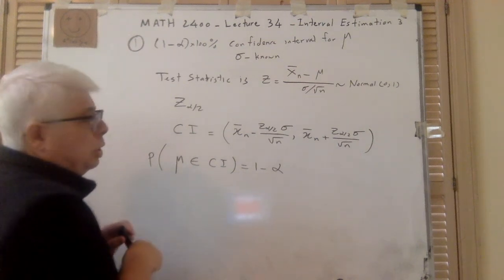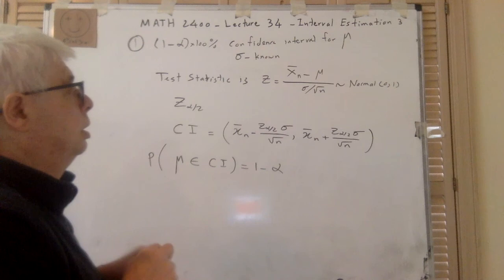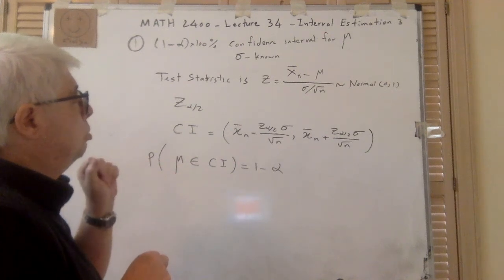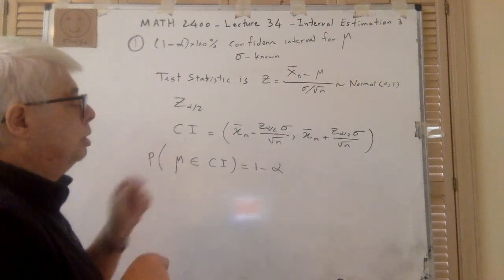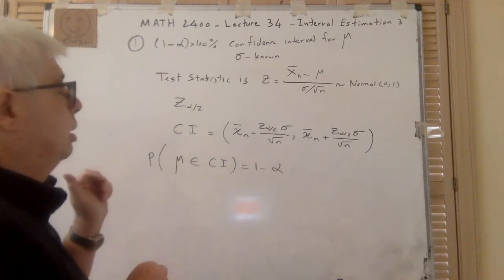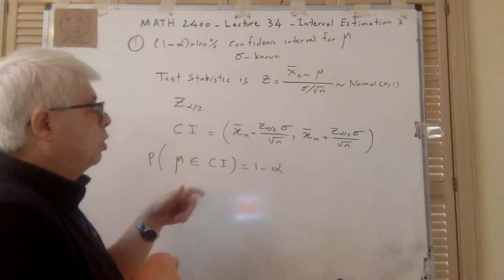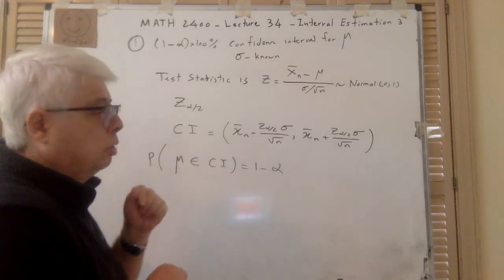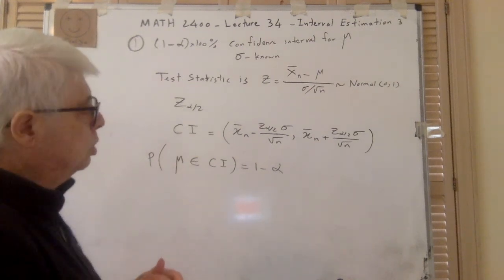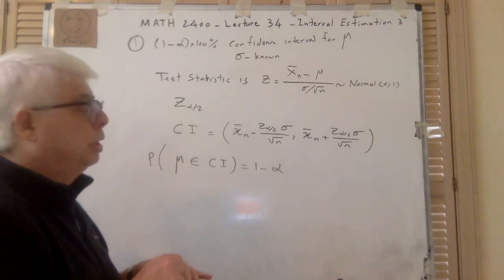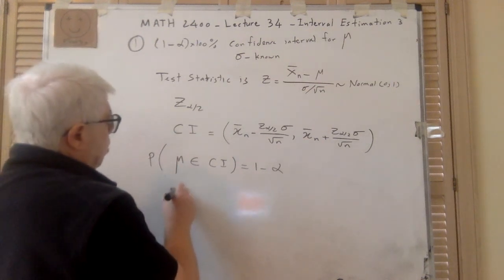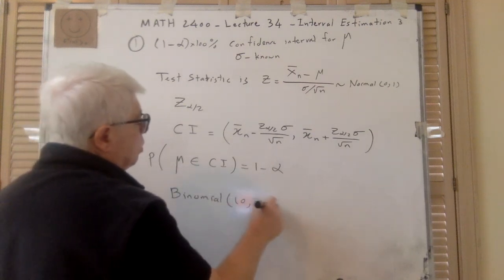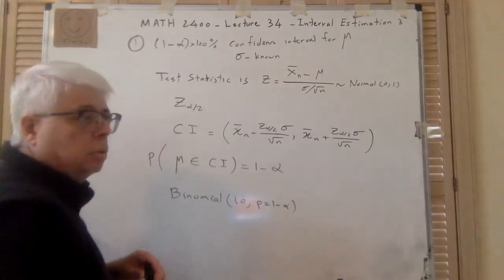So when you do the experiment one time, that's like a Bernoulli trial. Success is that μ, which is unknown, falls within this interval. So the probability of success is 1 minus α for one trial. So if we do 10 trials, then we have something like a binomial — binomial with 10 trials and probability of success 1 minus α.